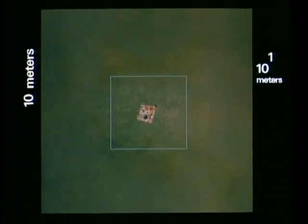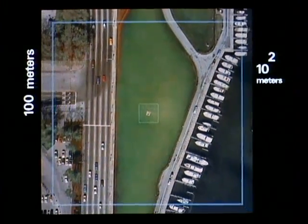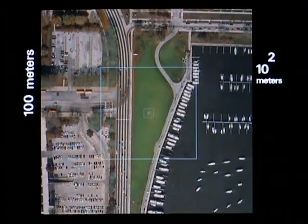This square is 10 meters wide and in 10 seconds the next square will be 10 times as wide. Our picture will center on the picnickers even after they've been lost to sight. 100 meters wide, the distance a man can run in 10 seconds.